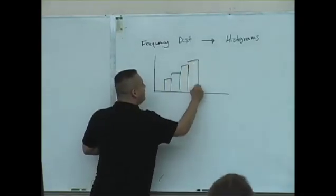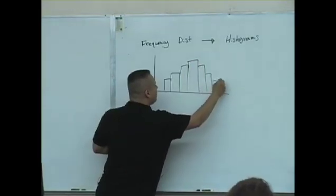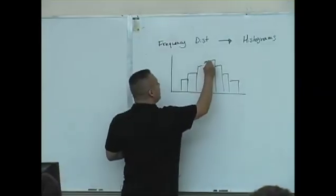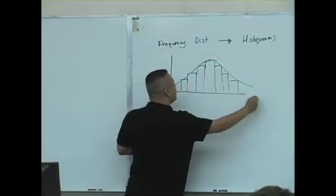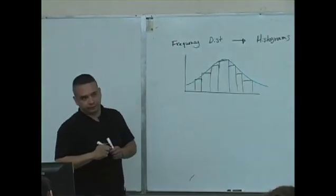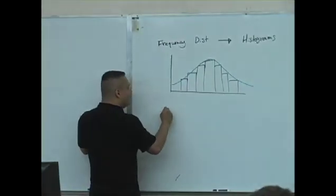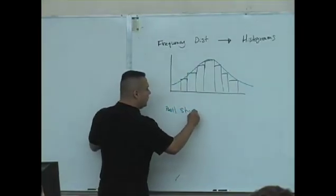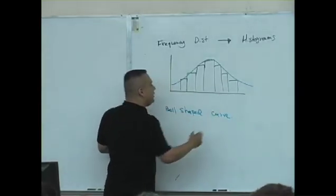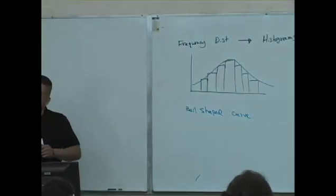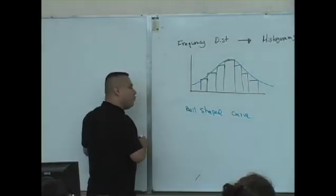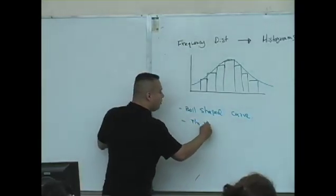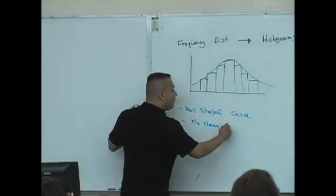We talked about it way back when. Sometimes you have histograms that look like this. I drew this picture and asked you what does that look like? This is a bell-shaped curve, but what it simulates is a distribution known as the normal probability distribution.